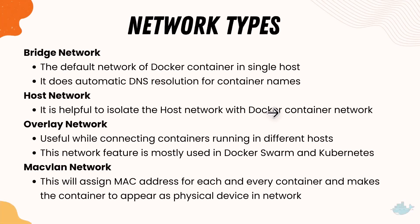There are different types of networks available within Docker. The most important and default network is the bridge network, because it is automatically enabled when you start working and is the default network in a single host environment. The most fascinating thing about the bridge network is it does automatic DNS resolution for container names — so if you have a container named 'sql server', you don't need to specify its IP address; you can just use its name.